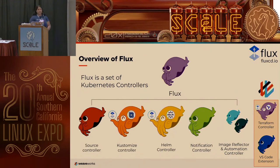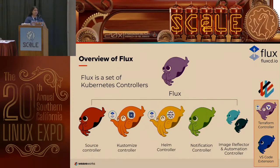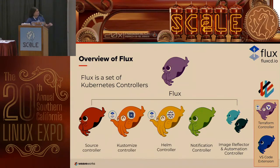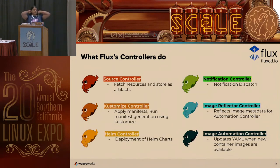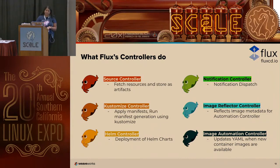Flux has a microservice architecture — it's a set of Kubernetes controllers. A controller in Kubernetes basically handles the lifecycle of objects: creation, updates, deletion. The source controller fetches resources and stores them as artifacts — that's the one listening to your source like GitHub, pulling YAMLs down and storing them. The Kustomize controller comes along and applies the manifest. It's named the Kustomize controller because it's looking for a kustomization.yaml. If it exists at the location you give it, it applies the files mentioned there. If there's no kustomization.yaml, it grabs all the YAMLs and applies them all.